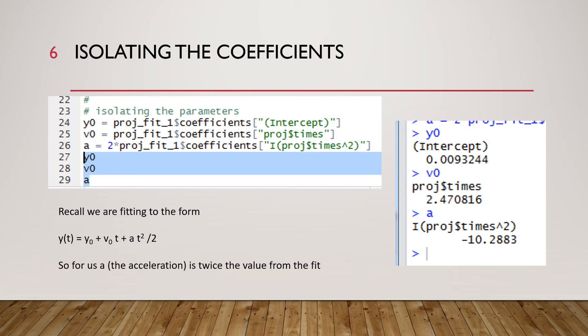We are extracting the values. You can see in the summary that the y-intercept was 0.00932, the initial velocity was 2.47, and the acceleration was minus 10.2883.